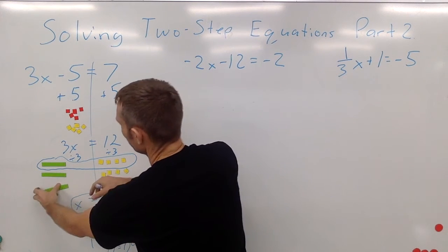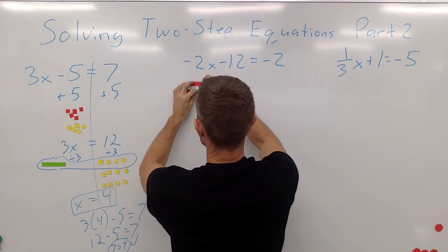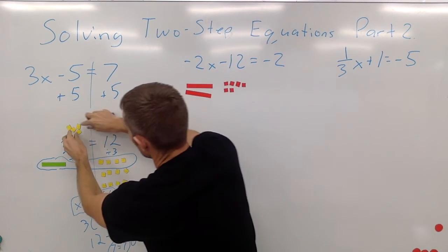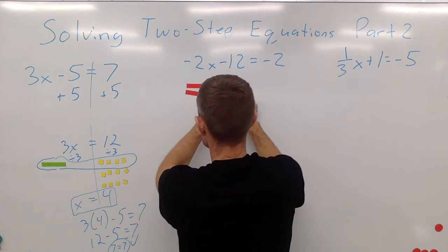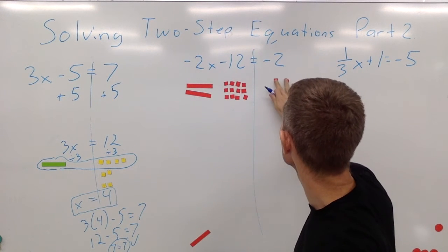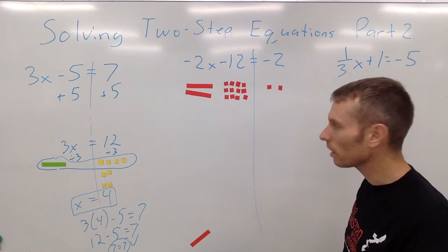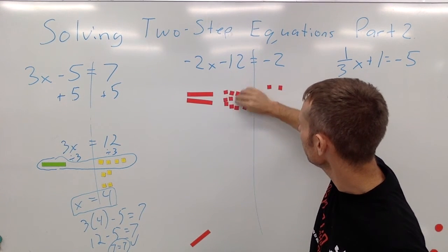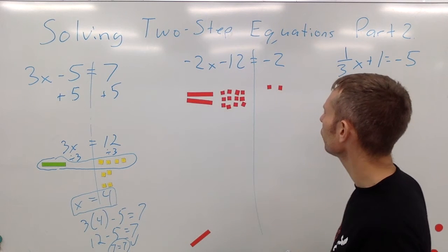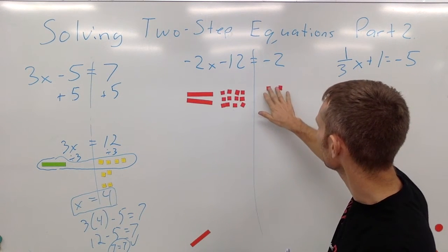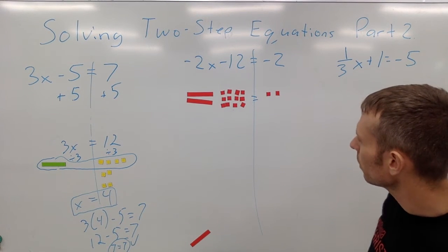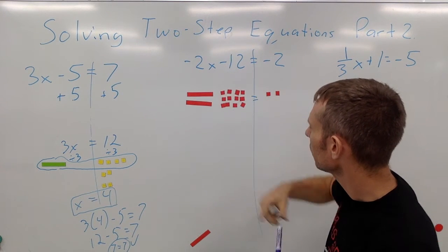Let's try another one. Here we have negative 2x minus 12 equals negative 2. Somehow these are equal and we need to figure out what x is. X is being multiplied by negative 2, and then 12 is being subtracted from that total. So the first thing we need to do is the inverse operation of minus 12, which is plus 12.